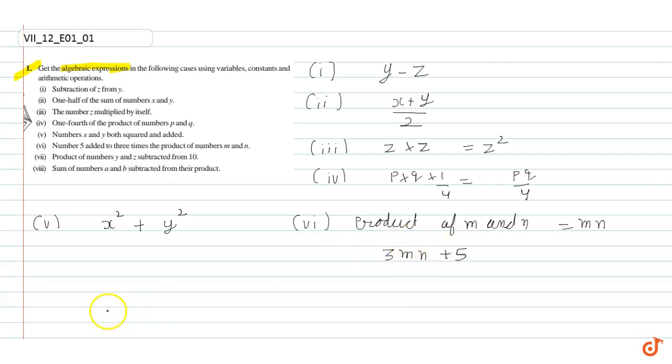Question number seven: product of numbers y and z subtracted from ten. So we have ten and we have to subtract the multiplication of y and z. This gives us ten minus y into z, which is 10 - yz.